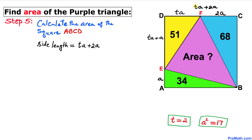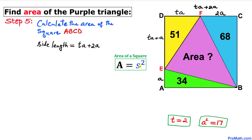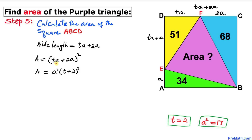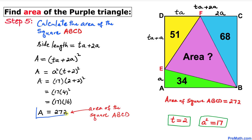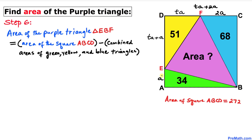Now let's calculate the area of square ABCD. The side length is ta + 2a. Using the area formula: area equals side squared, which is (ta + 2a)², factoring out a: a squared times (t + 2)². Substituting a squared equals 17 and t equals 2: 17 times (2 + 2)² equals 17 times 16, so the area of the square is 272.